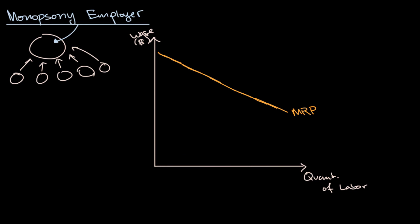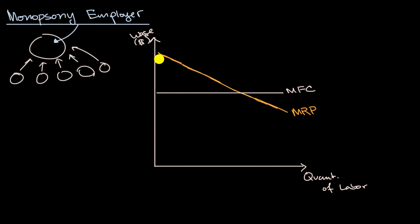We can think about the marginal factor cost. This is a significant difference between a monopsony employer and an employer in a perfectly competitive labor market. If we were dealing with a perfectly competitive labor market, the employer would just have to pay the market wage. So the marginal factor cost — the amount they would have to pay for an incremental unit of labor — would just be a constant, whatever the market wage of labor is. That would be the marginal factor cost.